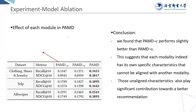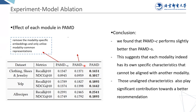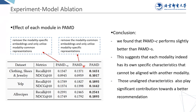In the ablation experiment, we first analyze the impact of different representations. In the recommendation phase, we remove the modality specific embeddings and only utilize modality common representations, denoting this variant as PAMD-S. Similarly, we keep only the modality specific representations, denoting it as PAMD-C. We find that PAMD-C performs slightly better than PAMD-S. Moreover, PAMD with both representations obtains better performance than either variant. This suggests that each modality has its own specific characteristics that cannot be aligned with another modality, and those unaligned characteristics also contribute significantly to better recommendation.